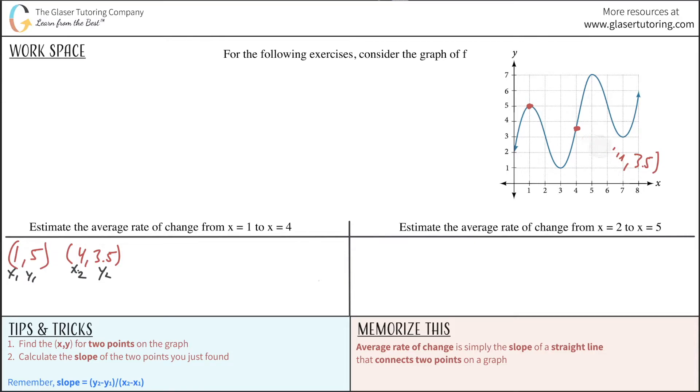Now, the whole idea here is the average rate of change from this point to that point is simply the slope of a straight line that connects the two points. And I can do a better job connecting those two points. There it is. This slope right here represents the average rate of change.